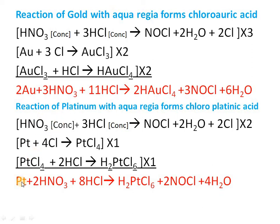Similarly, platinum treated with nitric acid and HCl — the composition of aqua regia — gives chloroplatinic acid. Here, PtCl₄ reacts with HCl to form H₂PtCl₆, which is chloroplatinic acid.